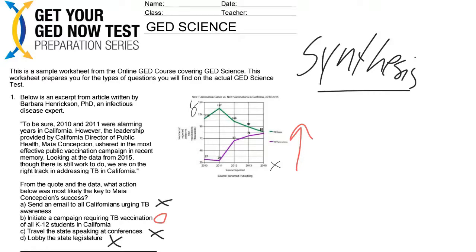That leaves us with B: initiate a campaign requiring TB vaccinations of all K through 12 students. This is some science-based content; however, what we really used to get the answer correct were reading skills. We looked at this synthesis question, took data from the chart, and took information from the reading passage, and put those two things together to understand that vaccinations were going up and incidences of TB were going down.